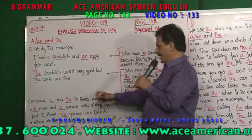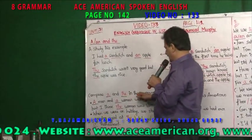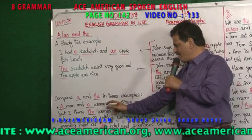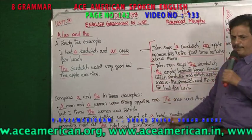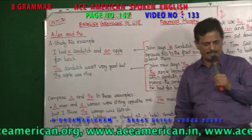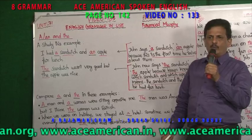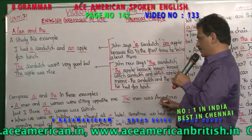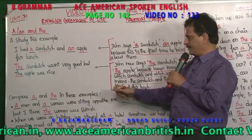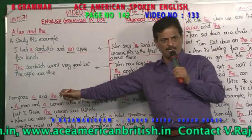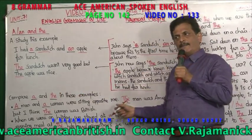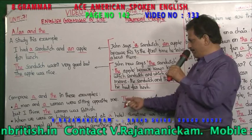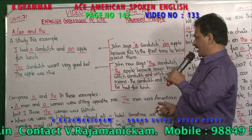Now compare A and THE in these examples. 'A man and a woman were sitting opposite me.' The man was American. After first time you are telling about the man, you are using 'a man'. Then once again you want to mention about the man, you are using 'the man was American.'